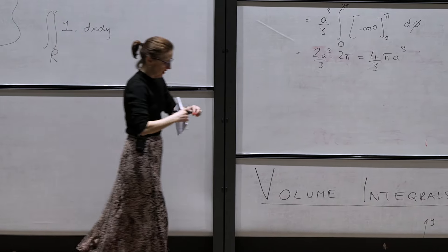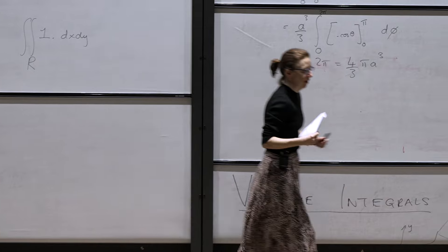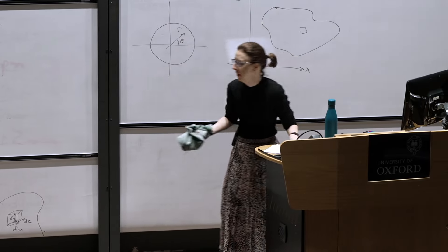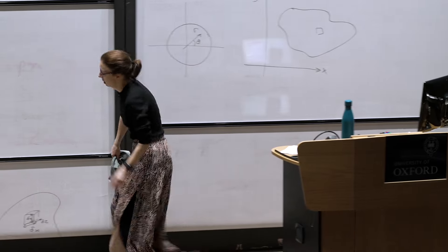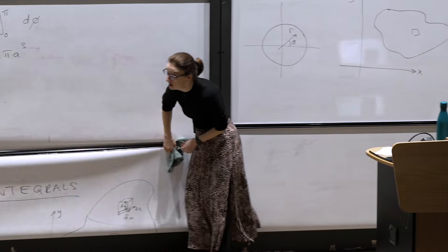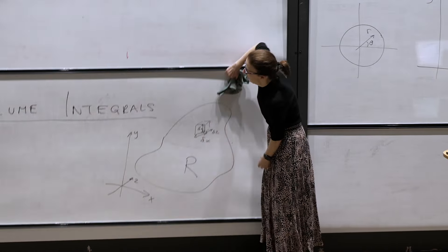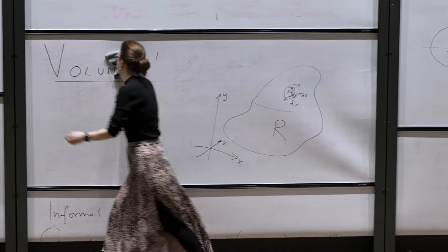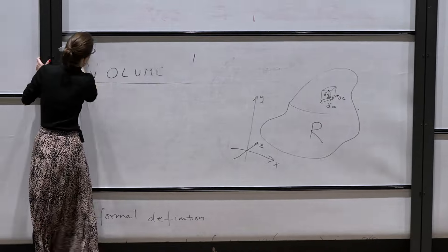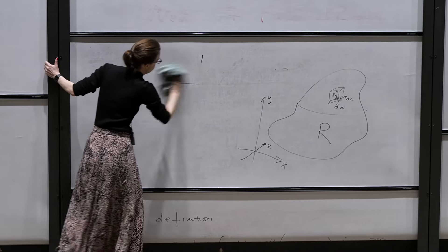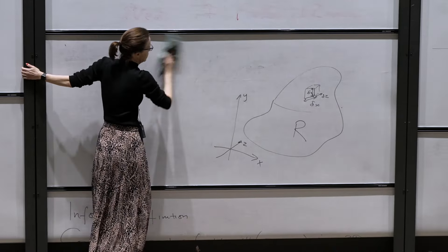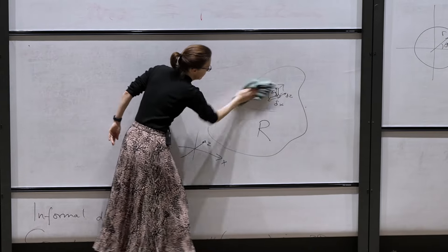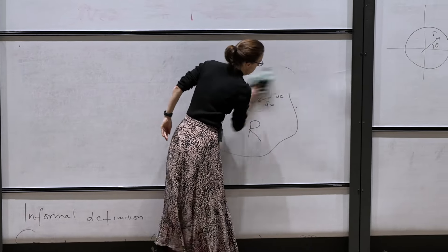That's demonstrating how we can use this coordinate system — of course you wouldn't go through all that pain because you know what the volume of a sphere is. But that's not always the case, and we may need to integrate over more complicated regions, being careful about the limits and boundaries of our domain.